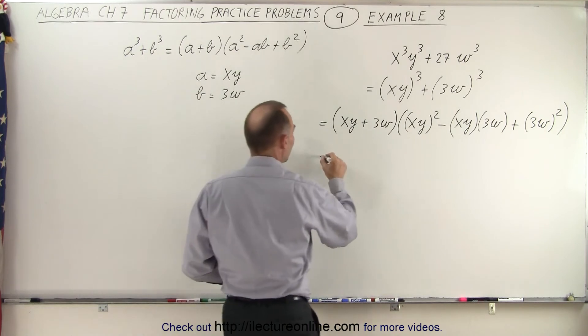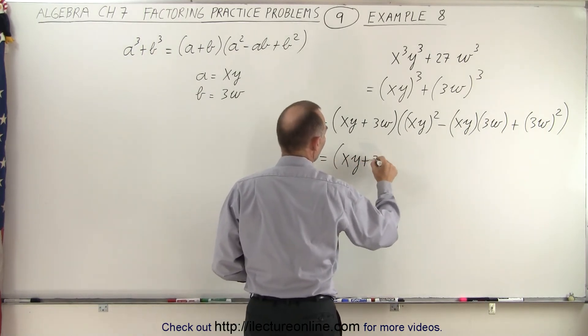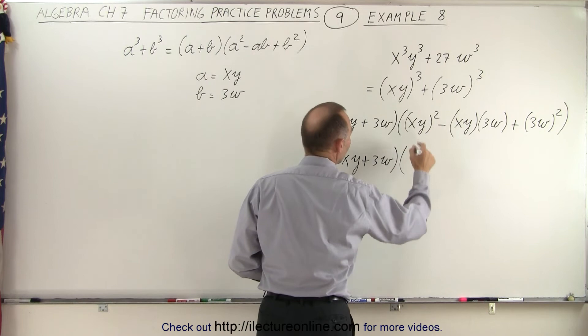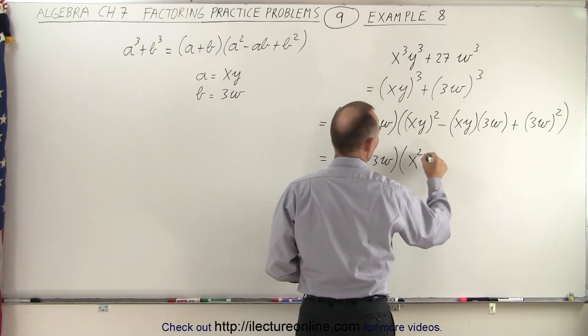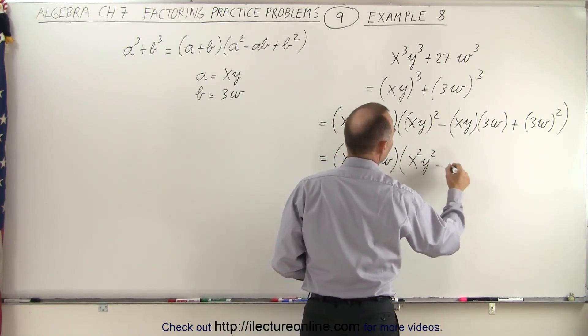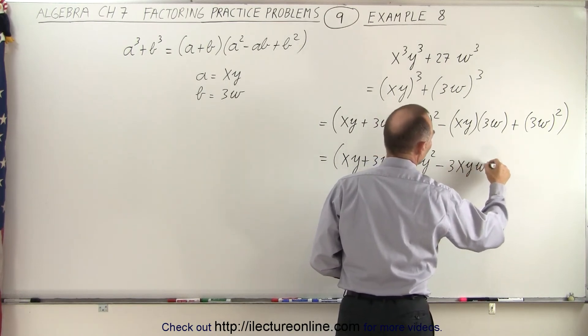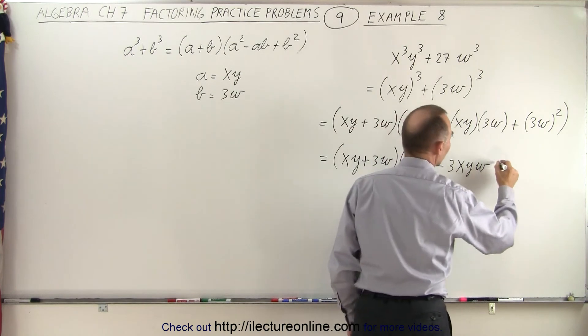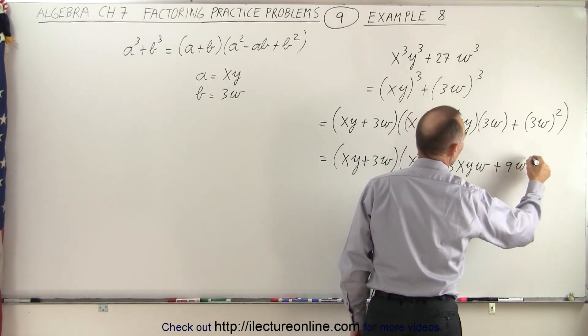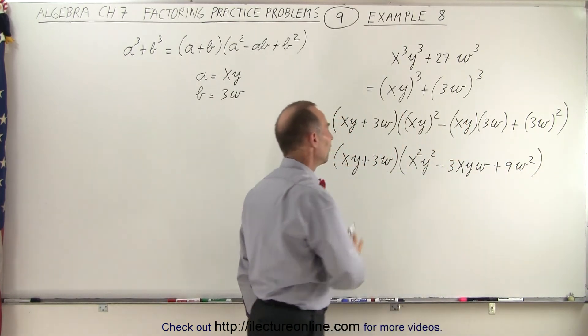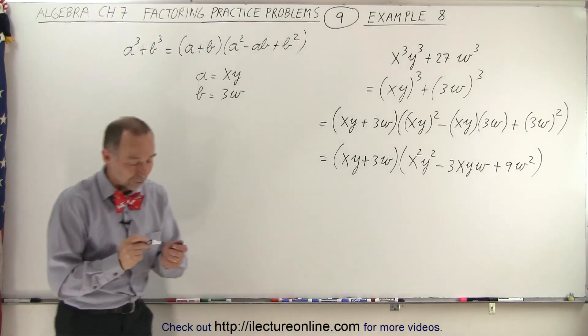So this can now be written as (xy + 3w)(x²y² - 3xyw + 9w²). We typically put it in alphabetical order, and that's the factored form of our original problem.